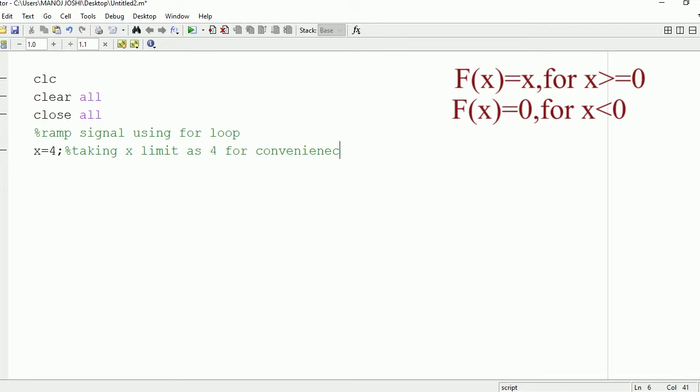Now we need to make use of the for loop. The for loop will run from i equals minus 4 to 4. This means we are going to plot a total of 9 samples: minus 4, minus 3, minus 2, minus 1, 0, 1, 2, 3, 4.